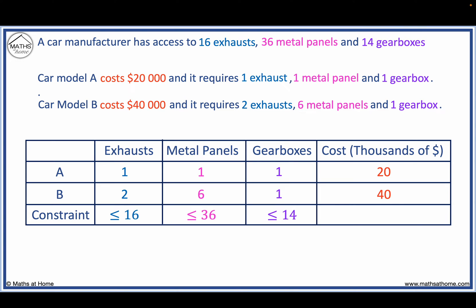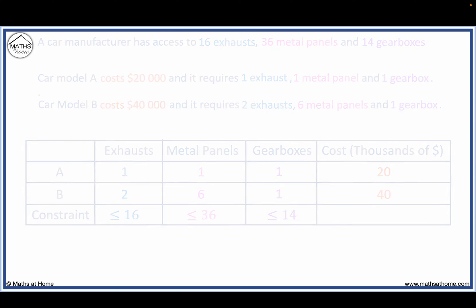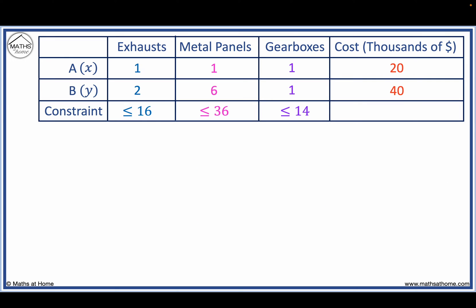We will look to find the optimal number of each car type that should be made to maximise profits. The constraint equation for the exhaust is x plus 2y is less than or equal to 16. For metal panels, x plus 6y is less than or equal to 36.